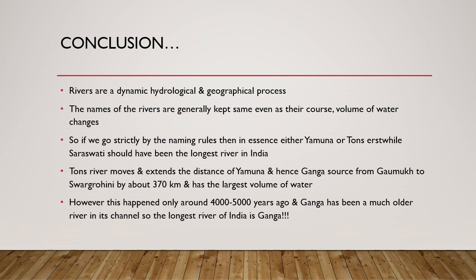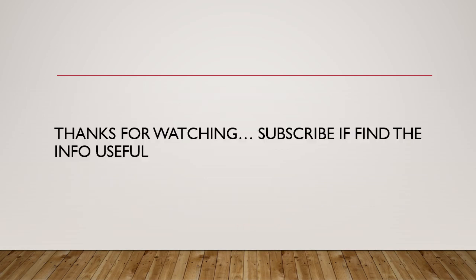Technically, it is the Tons or the ancient Saraswati river which has to be the longest river of India. However, since this phenomenon is only 4,000 to 5,000 years old and naming conventions of rivers don't change that often, Ganga — which is a much older river than this phenomenon — is still considered the longest river of India. Thank you very much for watching. Do subscribe if you are interested in more of this kind of information, and comment if you want any clarifications.